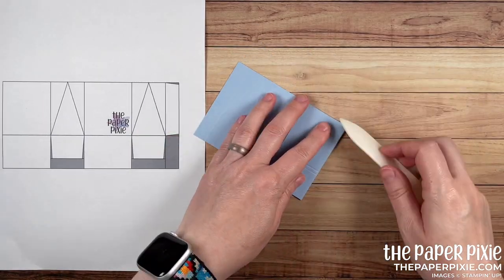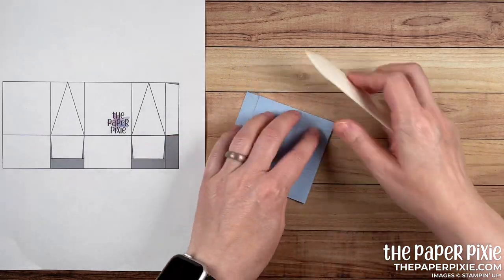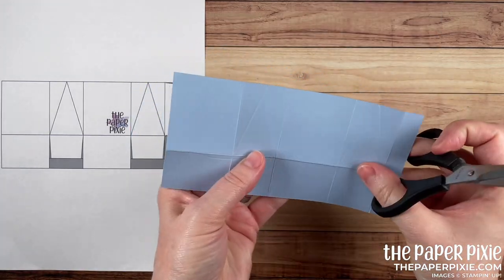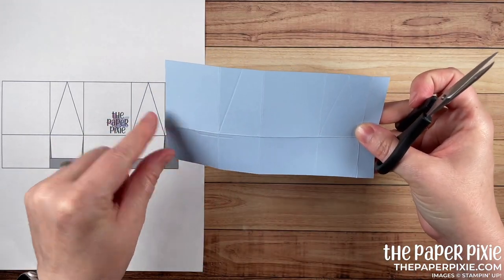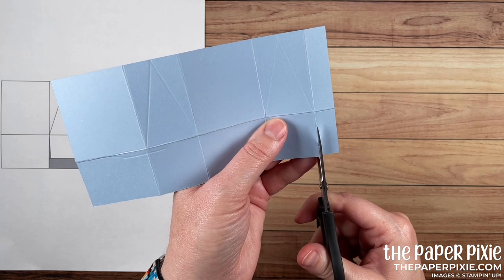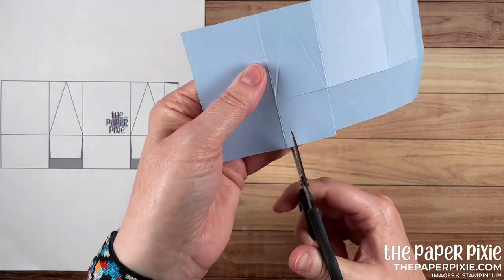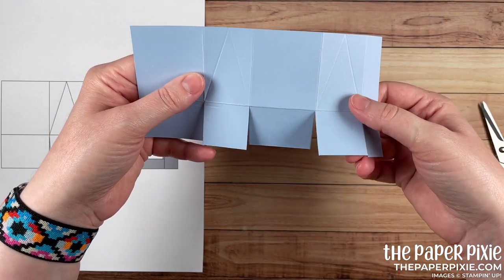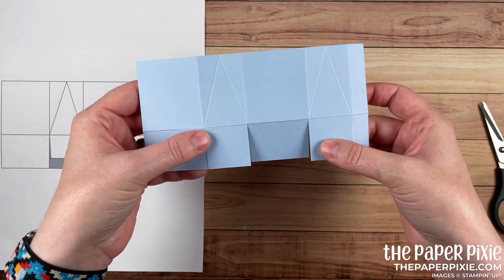Next, I'm going to fold and burnish on all the straight score lines. And with that 1 1⁄4-inch section along the bottom, I'm going to come in and cut up each of the vertical score lines, stopping at the horizontal score line. And these two smaller sections are just a little bit too long.